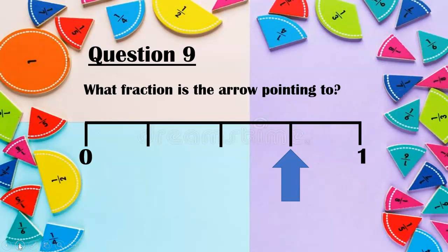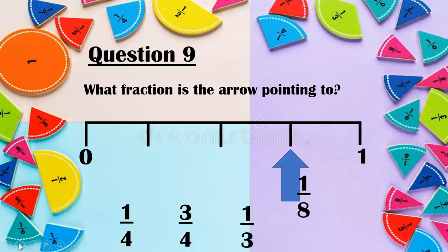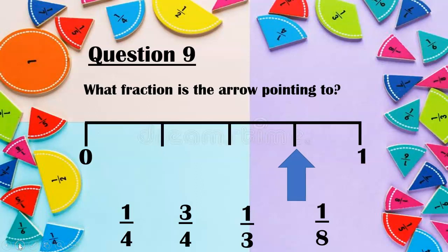Question nine. Which fraction is the arrow pointing to? I've got four sections and it's three sections along. Is it one quarter? Three quarters? One third? Or one eighth? I bet you get there before me. It's not a quarter and it's not a third. Well done if you said three quarters — there are four sections and we are three sections along.